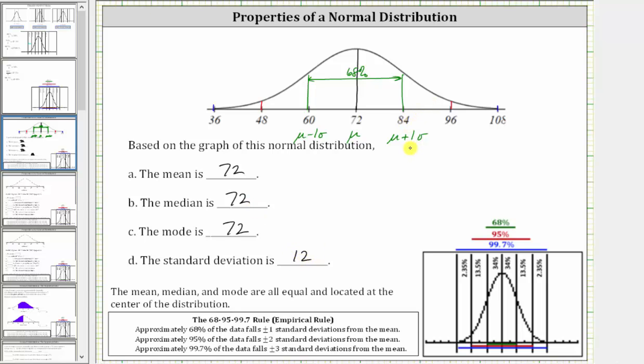If the numbers weren't nice, we could set mu plus one sigma equal to 84, where mu is 72, which would give us the equation 72 plus one sigma, or just sigma, equals 84. And then we would subtract 72 on both sides, which gives us sigma equals 84 minus 72, where sigma, or the standard deviation, is 12.